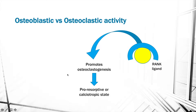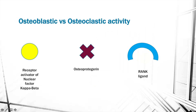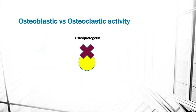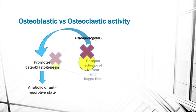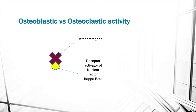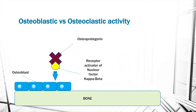This means the osteoclasts will resorb or dissolve bone to increase calcium content in the serum. If RANK binds to osteoprotegerin, this results in an osteoblastogenic state, responsible for bone production or an anabolic state. When osteoprotegerin binds to RANK, osteoblasts are laid down and bone is produced.